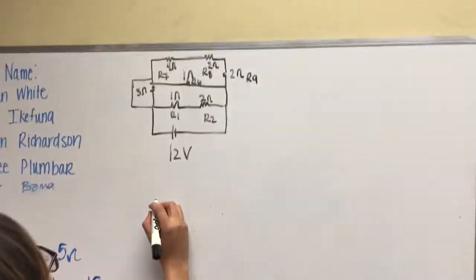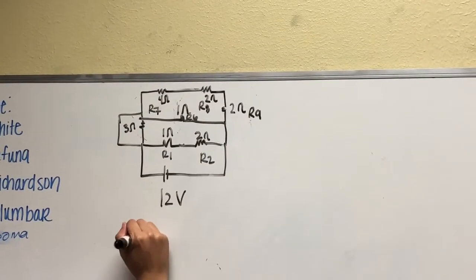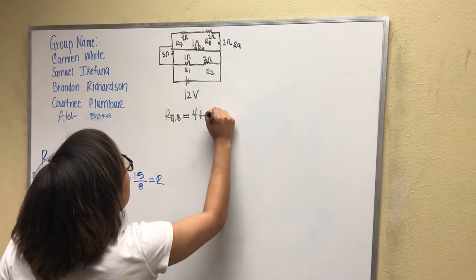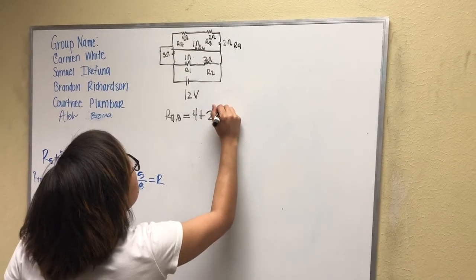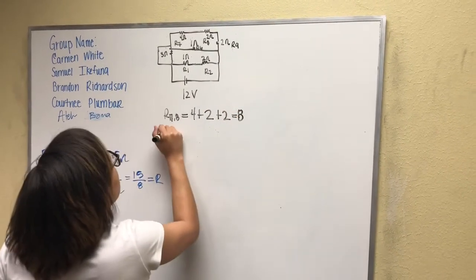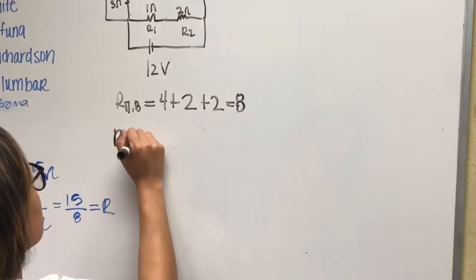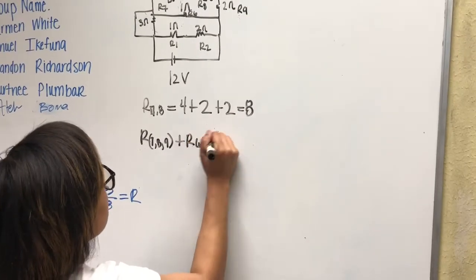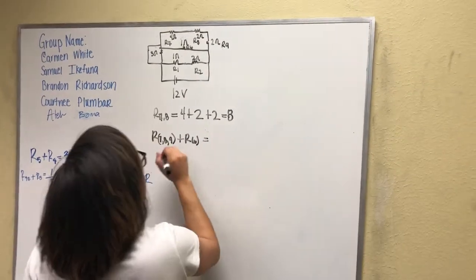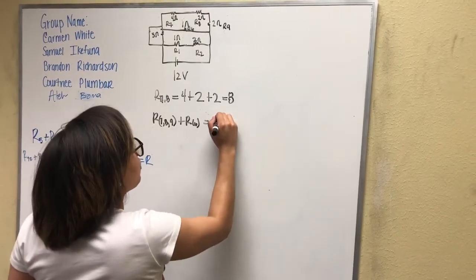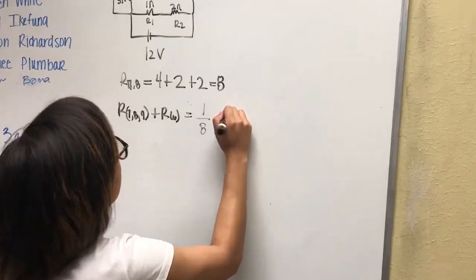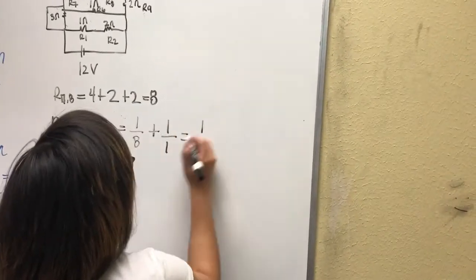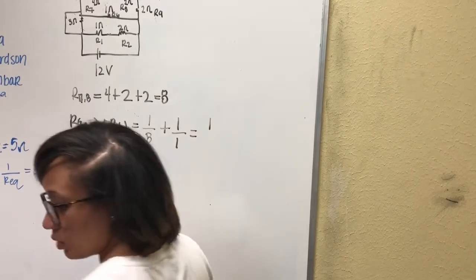So with R6 through R9, we have R7, R8, which is 4 plus 2, 4 plus 2 plus 2, which equals 8. And then you have R7, 8, and 9 plus R6. And this is our series, so you would do 1 over 8 plus 1 over 1, which will give you 9 over 8.